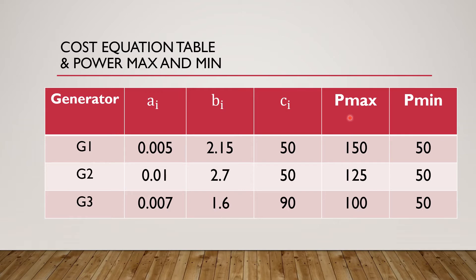Pmax is the maximum power generated by the ith unit; Pmin is the minimum power generated by the ith unit. There is a limitation for each unit on how much maximum and minimum power can be generated without loss. Here, the three generators operate at a minimum power generation of 50 megawatt. Pmax of unit 1 equals 150 MW, Pmax of unit 2 equals 125 MW, and Pmax of unit 3 is 100 MW. So the maximum power from all three generators is 375 MW and the minimum is 150 MW.